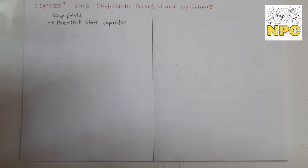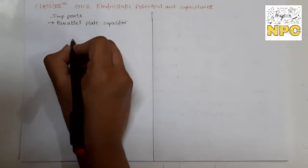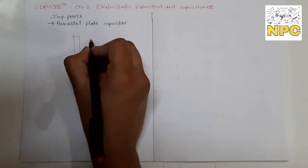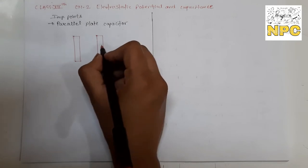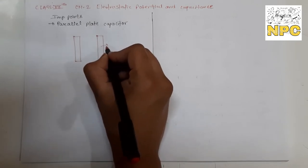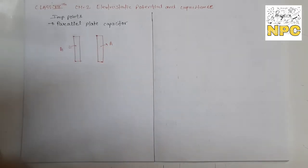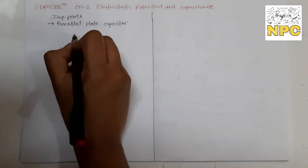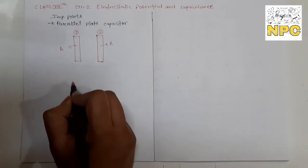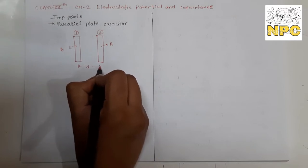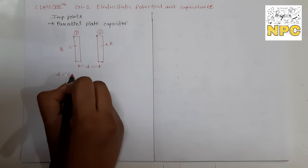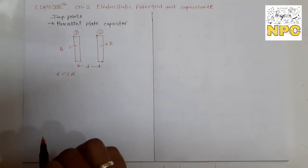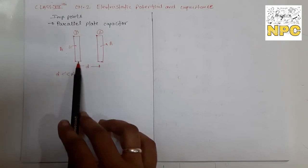In a parallel plate capacitor, it is made of two parallel conducting plates. You need two conducting plates that are parallel to each other. The area of both plates is the same. The distance between plate one and plate two is d, and generally d is very very small compared to the dimensions of the conducting plates.